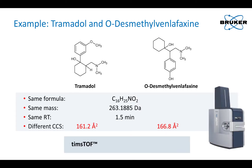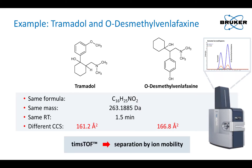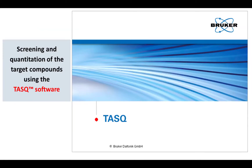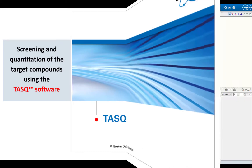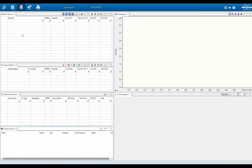Bruker's TIMSTOF accumulates ions and separates them according to ion mobility. For processing the acquired TIMSTOF data, Bruker's easy-to-use screening and quantitation software task is used. Let's have a look into the software.